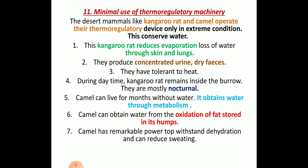Regarding minimal use of thermoregulatory mechanisms, this applies to both the kangaroo rat and the camel. For the kangaroo rat specifically: through lungs and skin they reduce evaporation, produce concentrated urine, produce dry fecal matter, have high tolerance to heat, and they are nocturnal — they go into burrows during the daytime and are only active during the night.